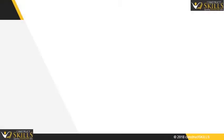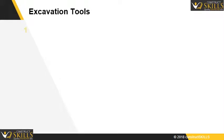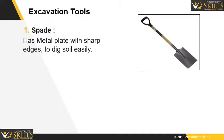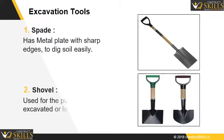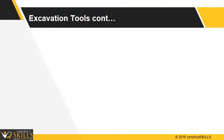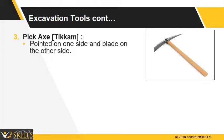Now we will learn the characteristics and use of each tool. Spade has a metal plate with sharp edges to dig soil easily. Shovel is used for the purpose of lifting of excavated or loose soil. Pickaxe is pointed on one side and has a blade on the other side; it is used for cutting of hard soil.